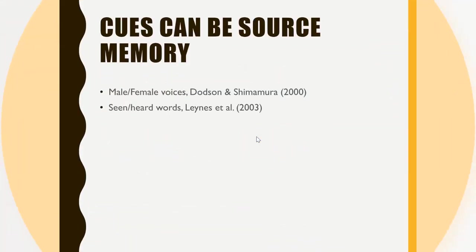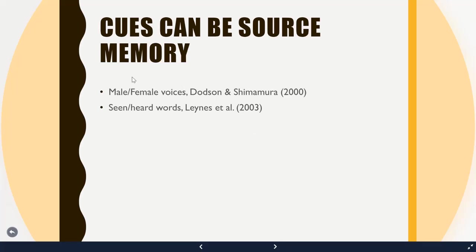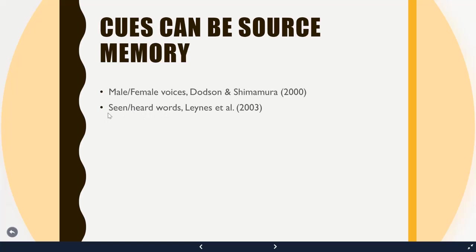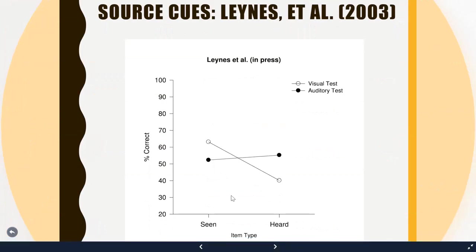Cues can also apply to source memory, as Dodson and Sherman Moore showed. People studied words heard in a male or female voice and were asked which voice said it. When the test voice matched the study voice, memory was better; when there was a mismatch, memory was worse. The same effect applies to modality — seeing versus hearing words at study. When the test modality matches the study modality you get better performance; a mismatch produces worse source memory judgments.